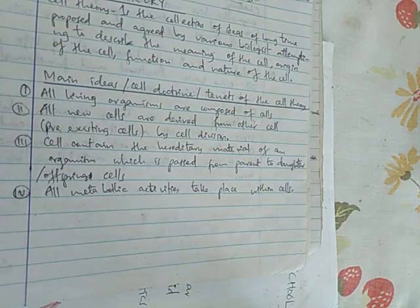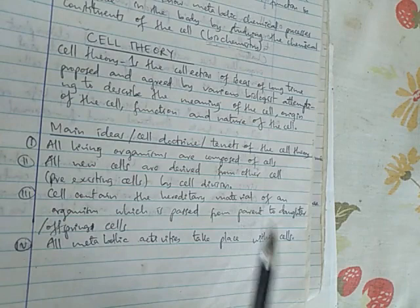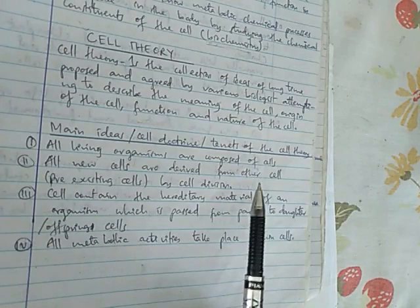Some of the books write five, seven, or different numbers, but these are the main ideas or cell doctrines, they are called main ideas of cell theory or cell doctrines, or tenets of cell theory.